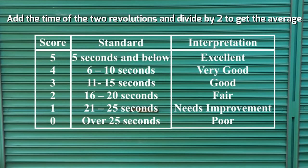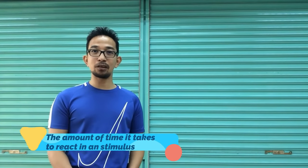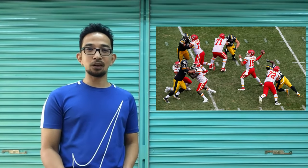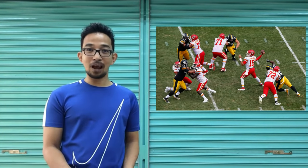This is the scoring for the hexagon test. Today, we're going to do physical fitness test for reaction time. Reaction time is the amount of time it takes to respond or react to a stimulus. We need it in most sports — for example, reacting on an offense, reacting on a defense, or reacting to a gun at the starting line of a 100-meter sprint.